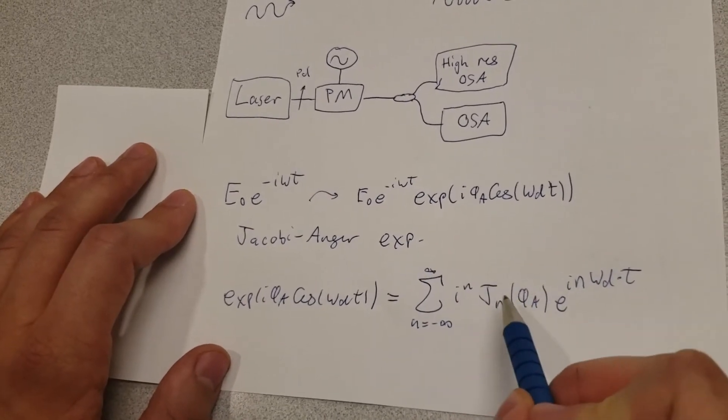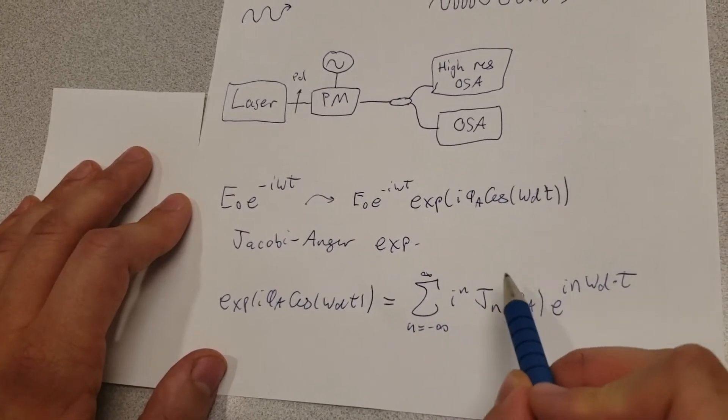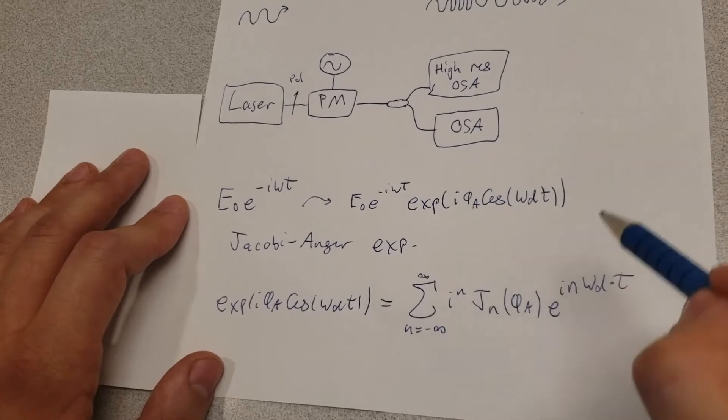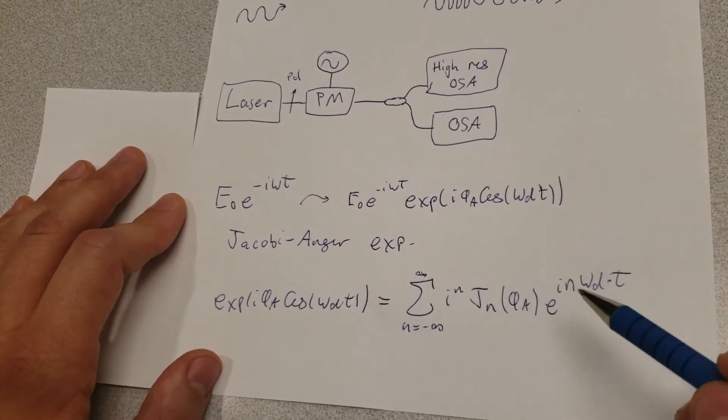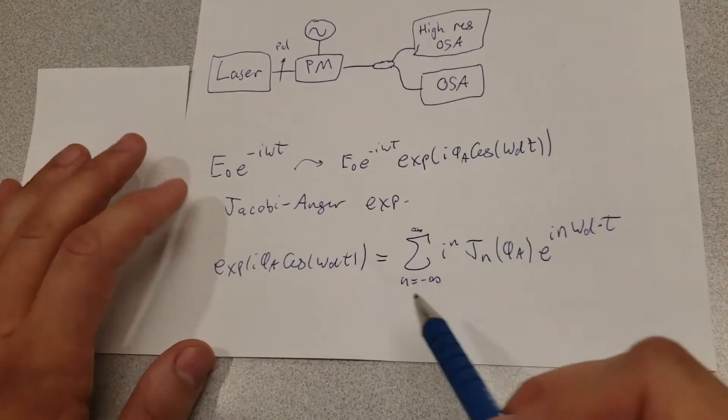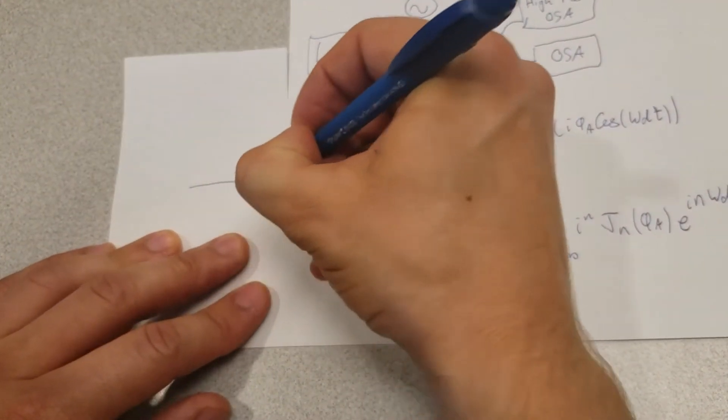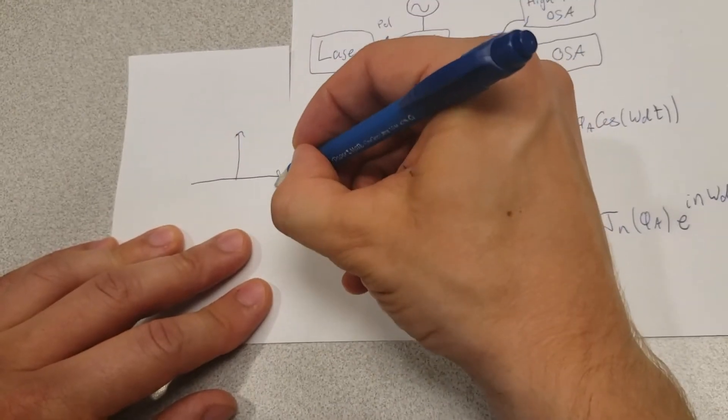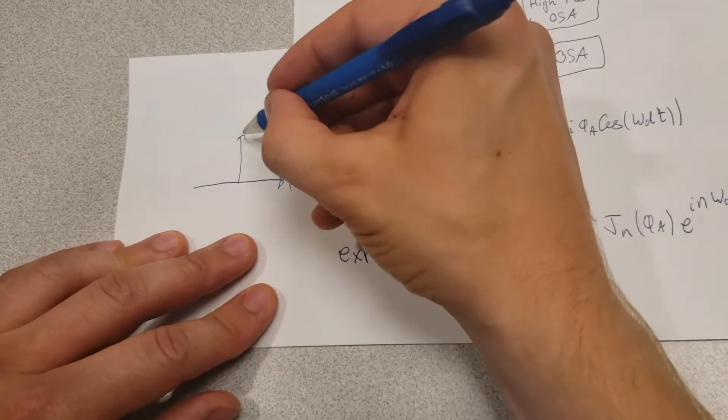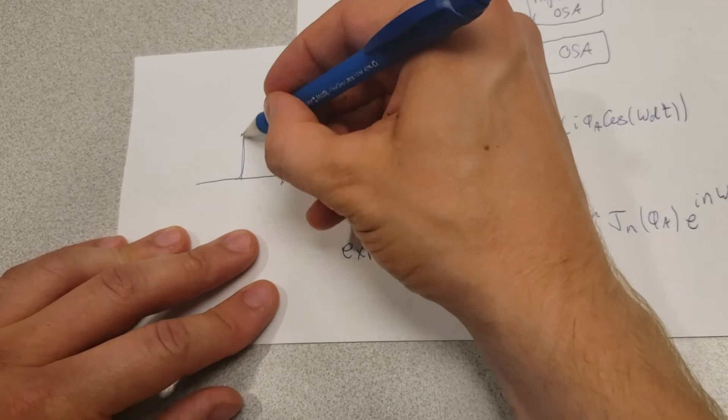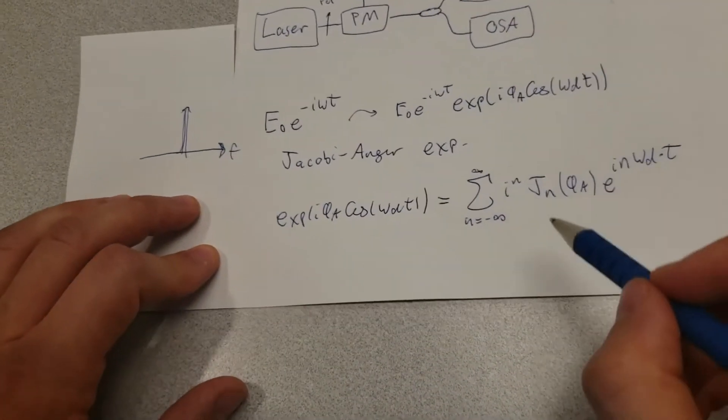Okay, so this particular type of function in here is called a Bessel function that you may be familiar with if you ever solved the wave equation in a radial system. And essentially, if we think about it and sketch it out, then the initial field we have up here is going to look something like this. We just have the frequency here, and then we have a single laser line right there, maybe with a bit of width.